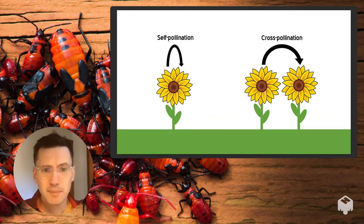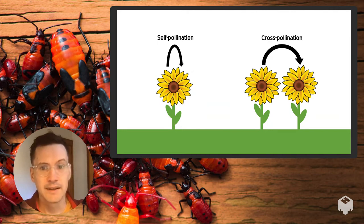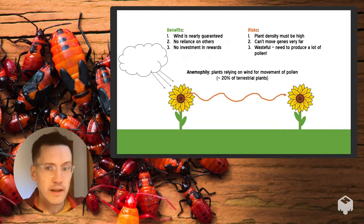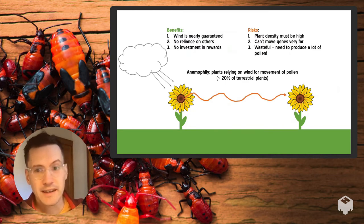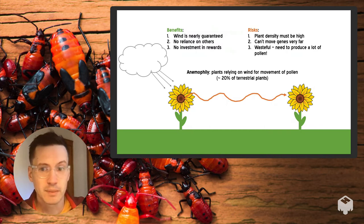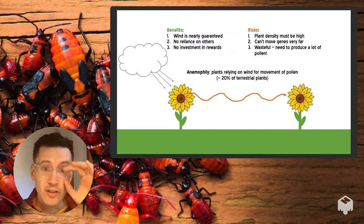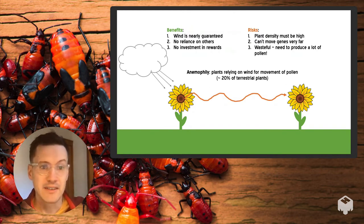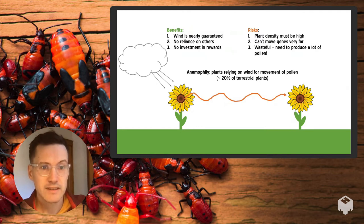So how does a plant solve this problem if it can't move its pollen on its own? One way is to rely on abiotic means of transporting gametes, such as the wind. A huge number of anemophilous plants still rely on wind to vector their pollen. One benefit is that wind is pretty much a guarantee — barring being in the very deep depths of a stagnant tropical forest, you're probably going to experience wind at some point.